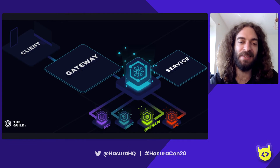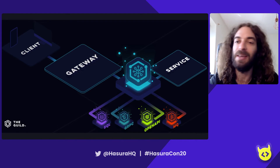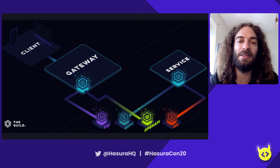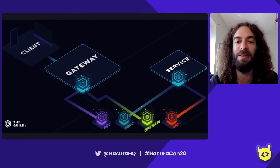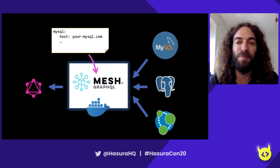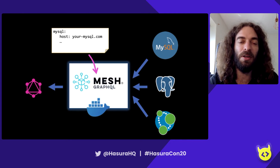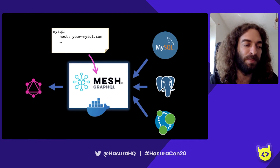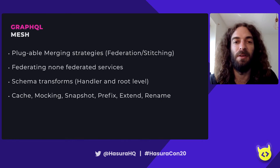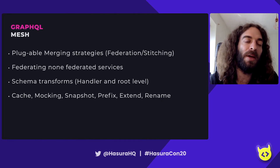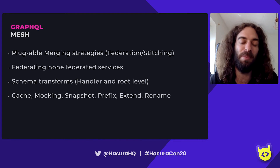Once GraphQL Mesh gets that information and converts it, it can be run as a gateway or as an SDK on your existing services. There's full flexibility of how you can run it, where you want to run it, and how you want to use that graph. For example, one person in the community basically built a Docker image where you input the YAML config file for Mesh and you just get a gateway running that exposes GraphQL. We built Mesh to be completely flexible — every step of the way is customizable and you can do transformations at any step, which is why it's extremely flexible and can support so many use cases.